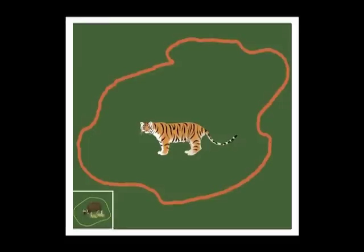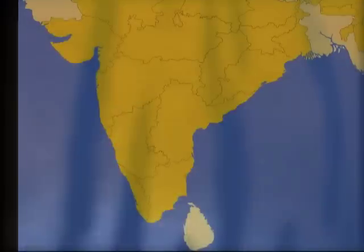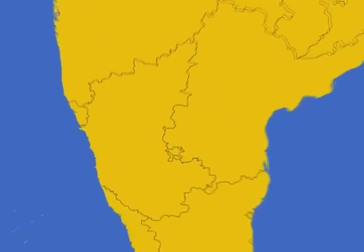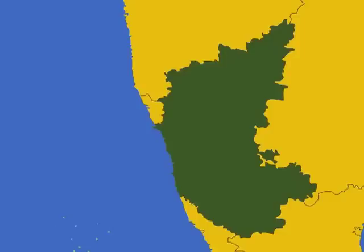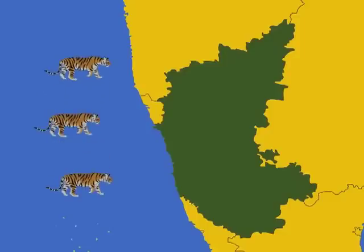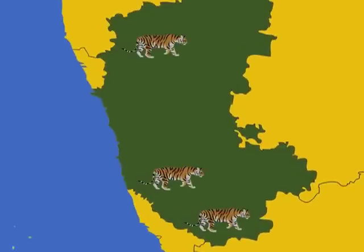For larger prey animals like Gaur, the cell sizes can be 15 square kilometers. In summary, occupancy surveys allow us to monitor the status of tigers and their prey at large landscape scales, such as entire countries or large regions within a country. The main goal of an occupancy survey is not to find out how many animals there are in a landscape, but to determine where those animals are distributed.